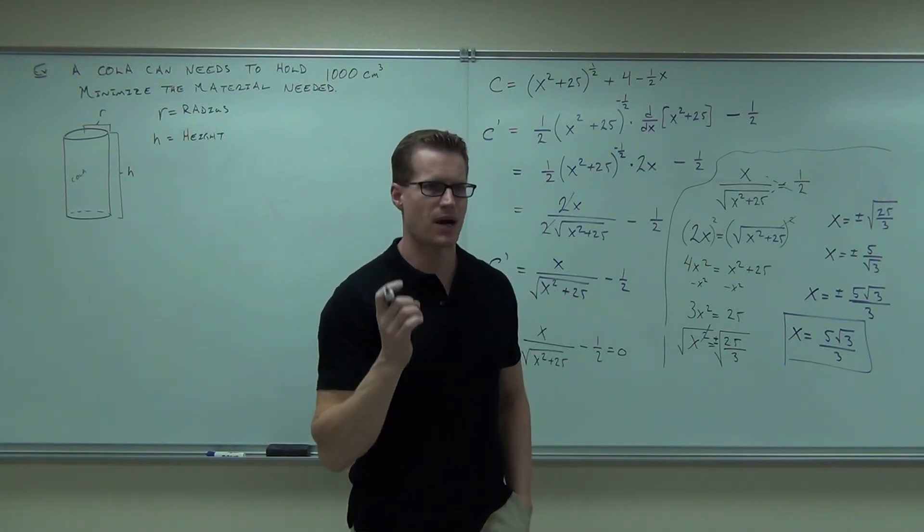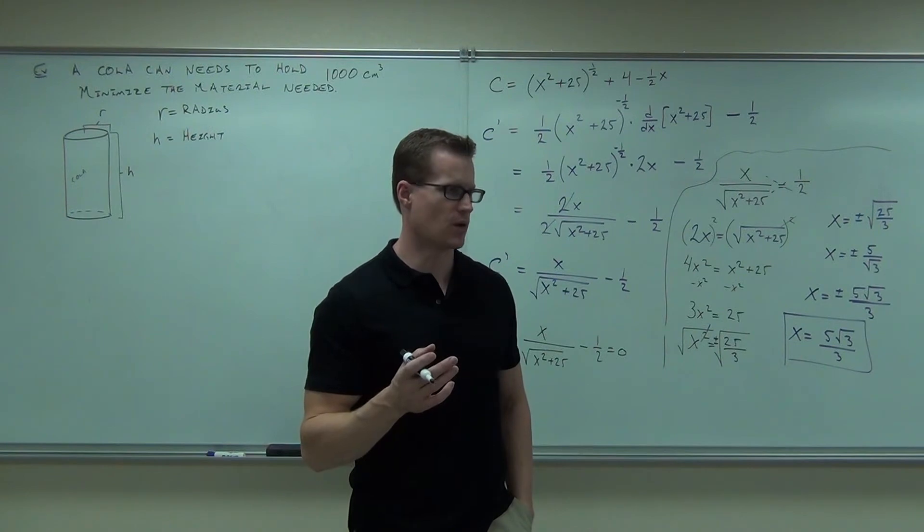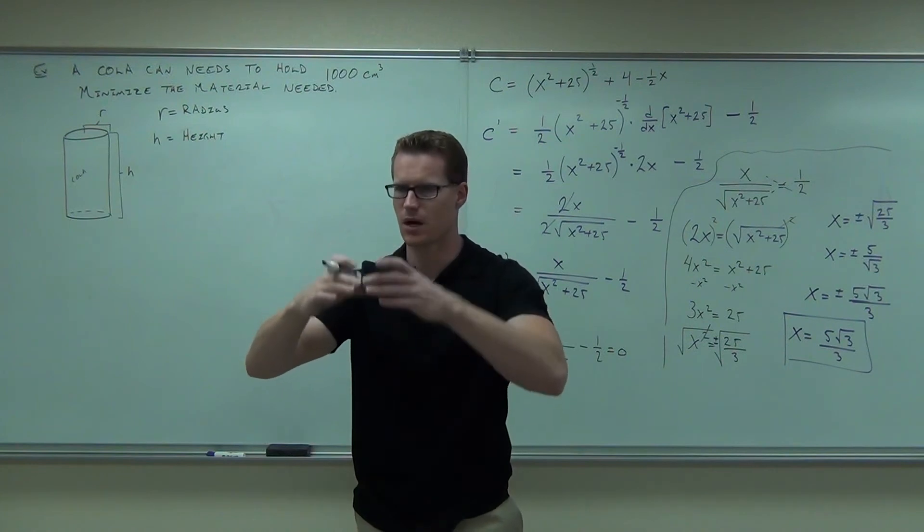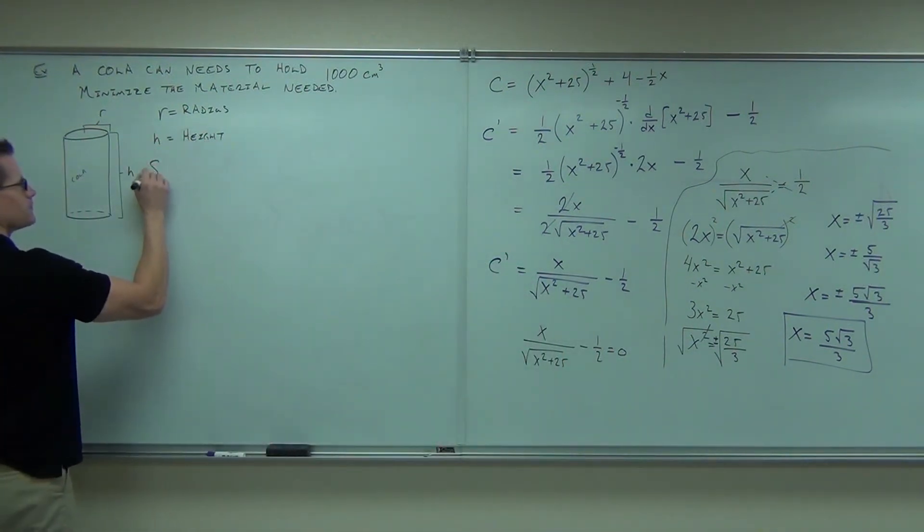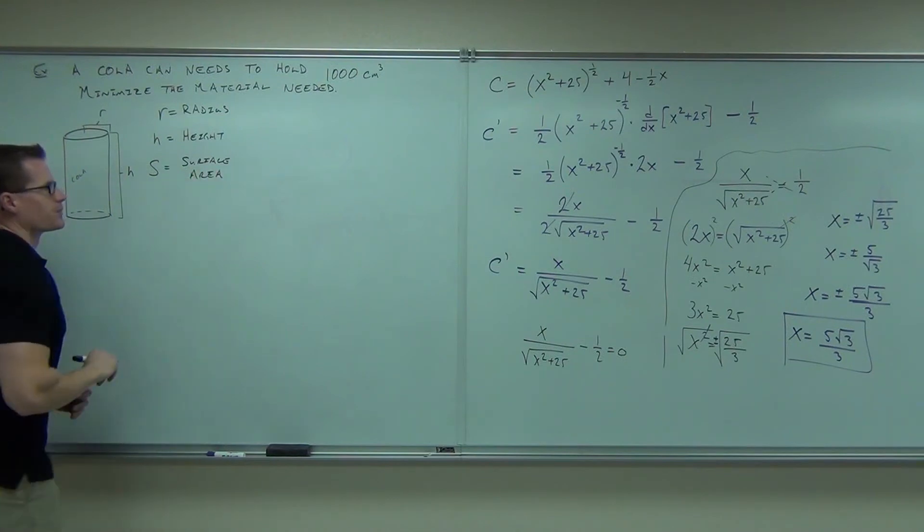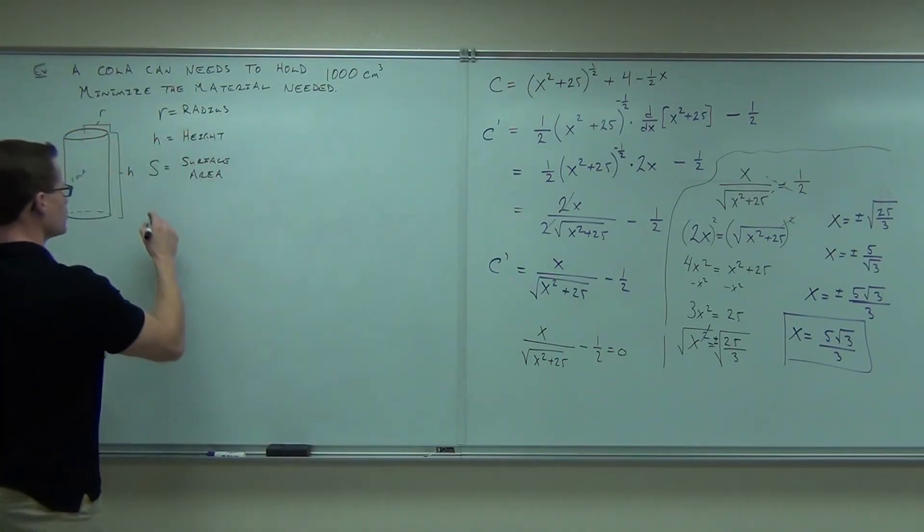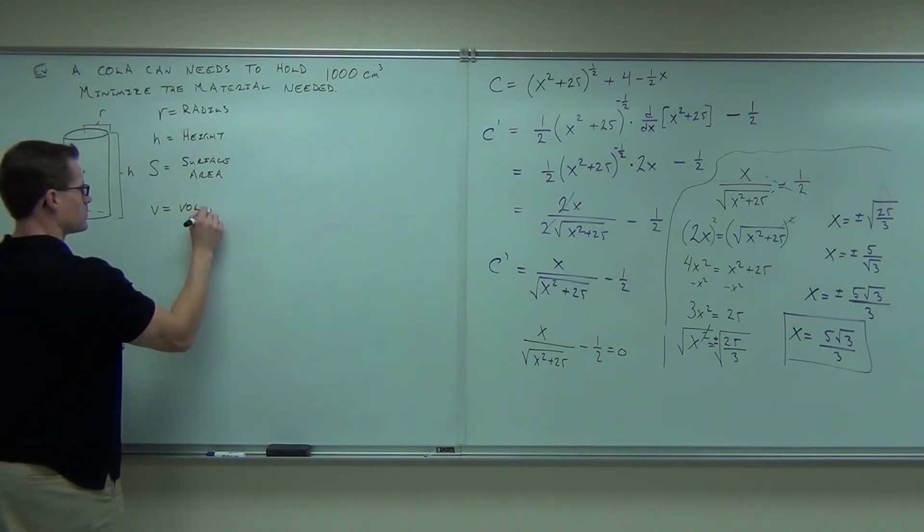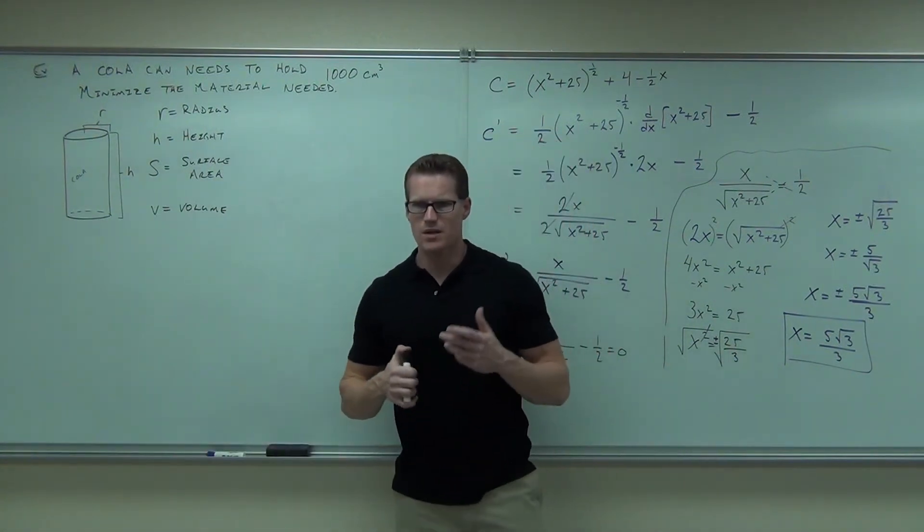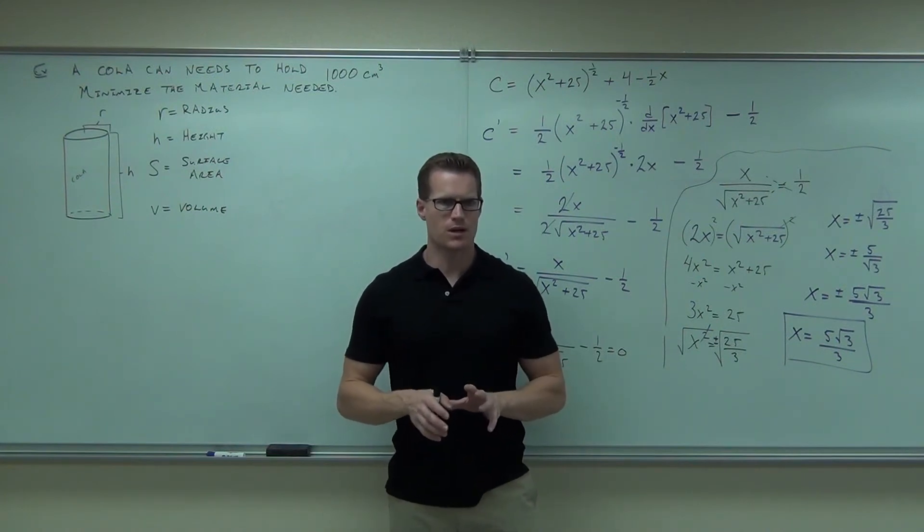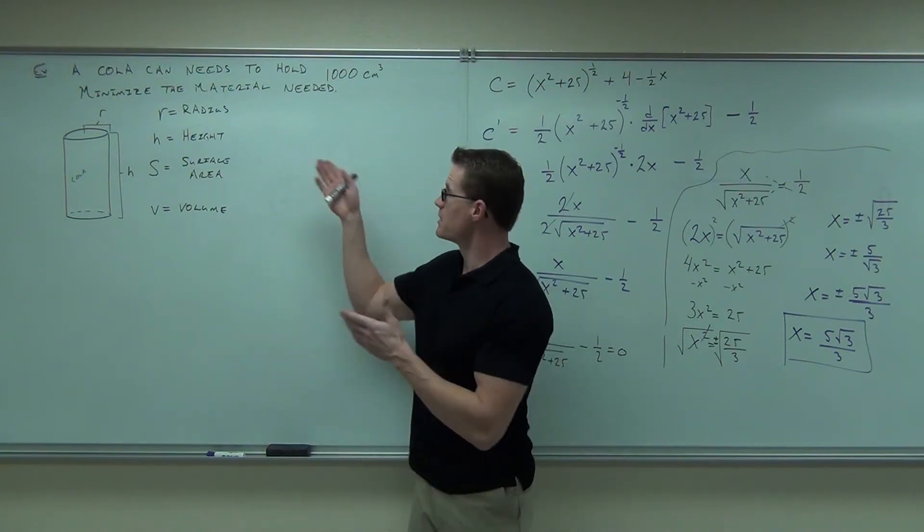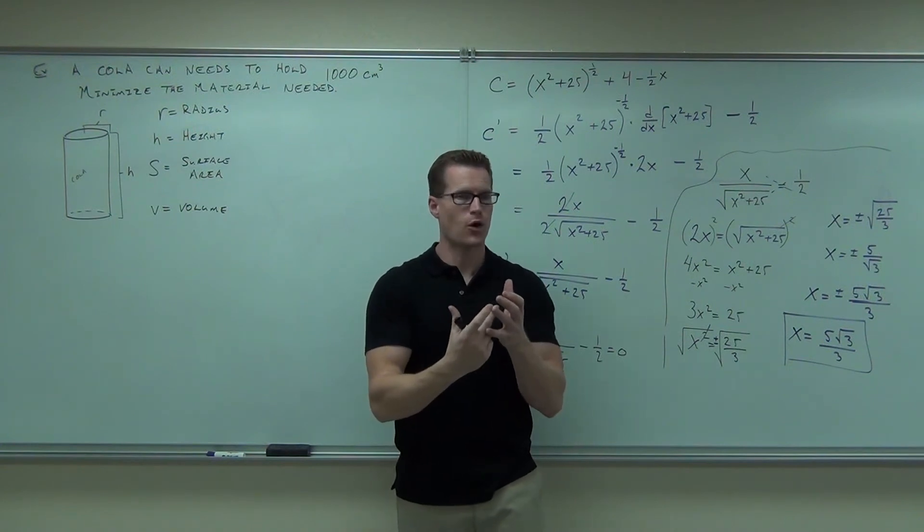So, let's go ahead and do this. R is the radius. H is the height. And let's do this. Let's call S the surface area. You follow? Because the surface area is the amount of aluminum, or whatever you're going to make your can out of, hopefully, probably aluminum, that you're going to need. Do you follow me on that? So, the surface area would be the faces, the top, the bottom, and the side of our cylinder.